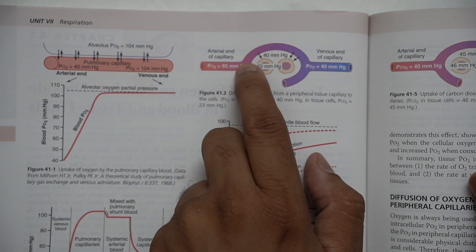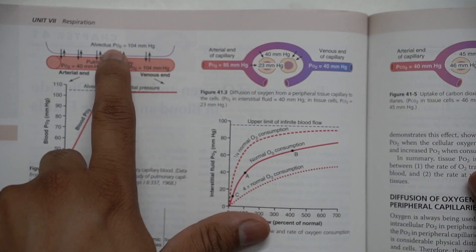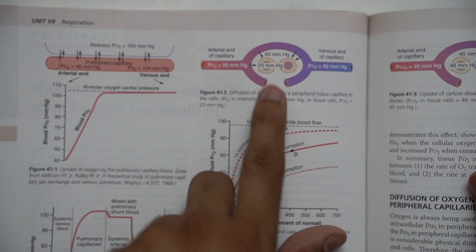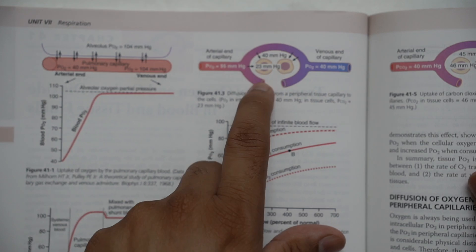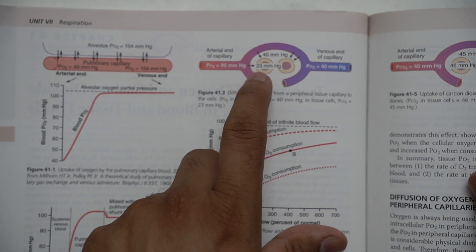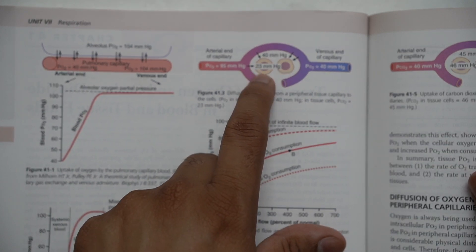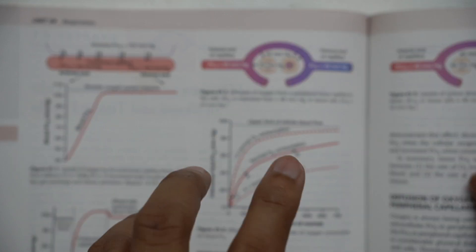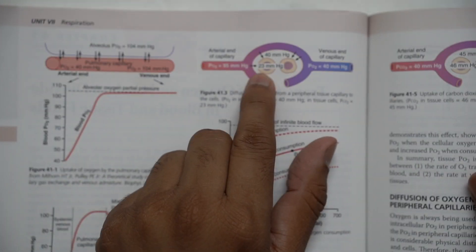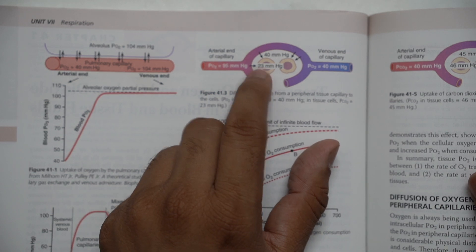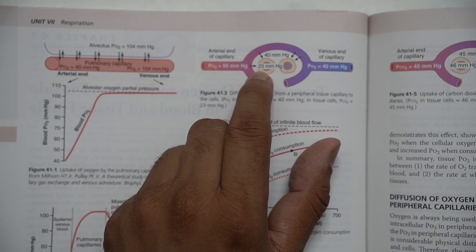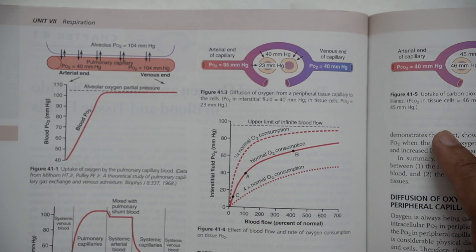Because PO2 from capillaries is 95 mmHg, oxygen moves to the interstitium, and from the interstitium it moves to the cell where PO2 is only 23 mmHg. So the movement of oxygen from alveolus to pulmonary capillary, to interstitium, and into the cell is dependent on the partial pressure of oxygen — the undissolved oxygen in the blood — which is responsible for the delivery of oxygen to the cellular level.